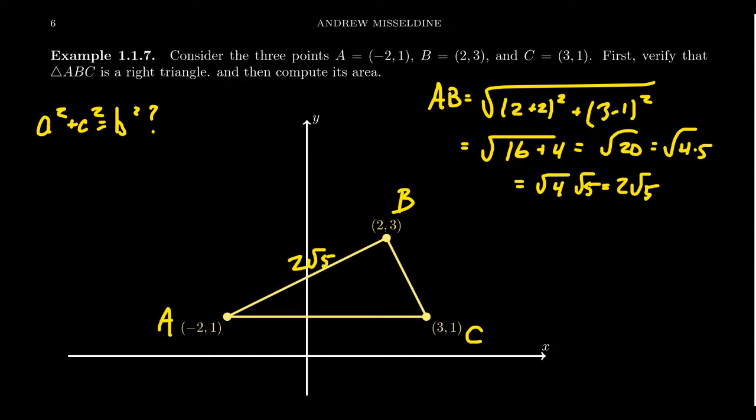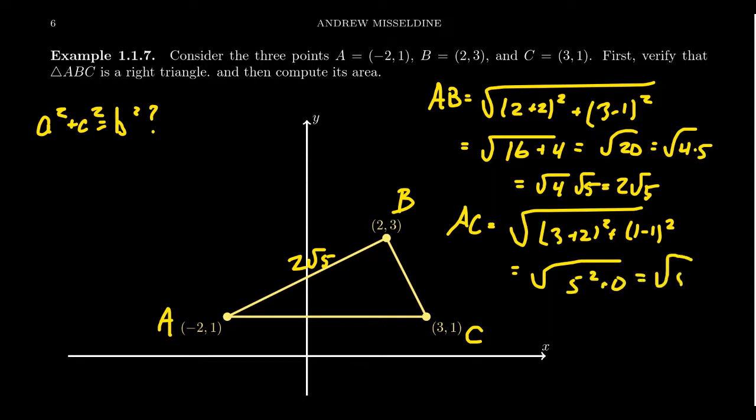What about the distance, say, AC? So again, using the distance formula, we're going to end up with doing the following. Take the difference of the x-coordinates, so we're going to get 3 minus negative 2, which is 3 plus 2 squared. Add to that the difference of the y-coordinate squared, so you get 1 minus 1 squared. So in this situation, you end up with 5 squared plus 0. That is, this is just the square root of 5 squared. I don't need to know that 5 squared is 25, because when I take the square root, I'm going to get back a 5. So the distance between A and C is actually a whole number. It's going to be 5.